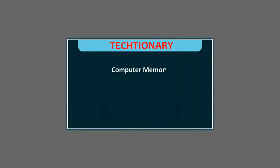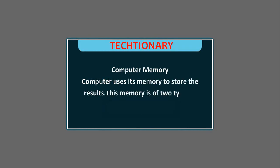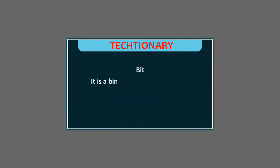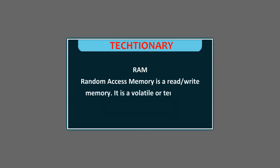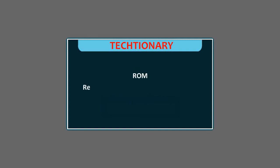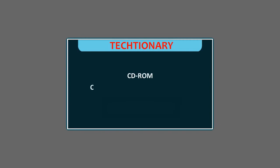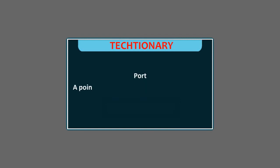Key terms: Computer memory — a computer uses its memory to store results; this memory is of two types, primary memory and secondary memory. Bit — it is a binary digit, either a 0 or 1. RAM — Random Access Memory is a read/write memory; it is a volatile or temporary memory. ROM — Read-Only Memory is a non-volatile or permanent memory. CD-ROM — Compact Disk Read-Only Memory. DVD — Digital Video Disk or Digital Versatile Disk. Port — a point of connection between the computer and its peripheral devices.